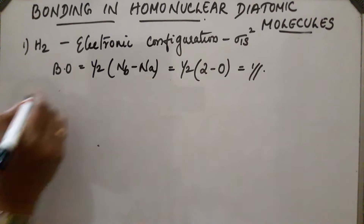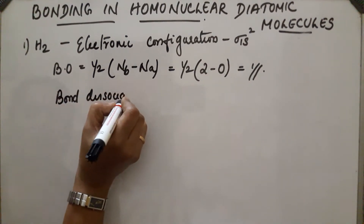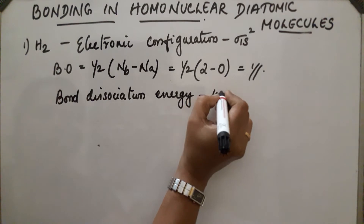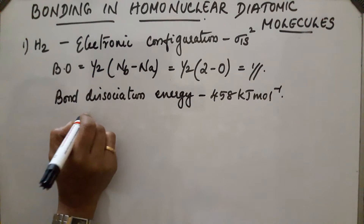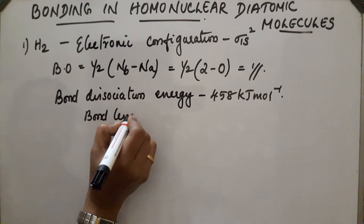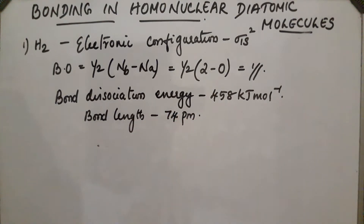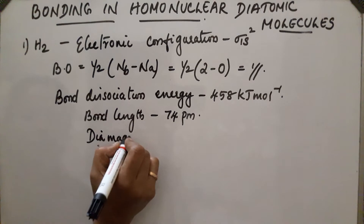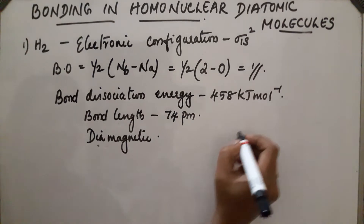The bond dissociation energy is 458 kilojoules per mole. The bond length is 74 pm. It contains no unpaired electrons, which means the molecule is diamagnetic.